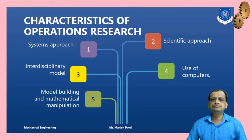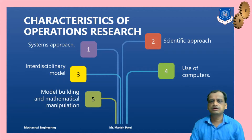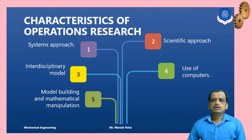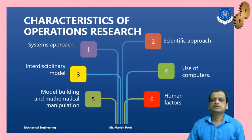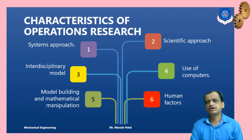Fifth, mathematical model building is one of the key characteristics of operations research. All practical life problems encountered in day-to-day scenarios are converted into mathematical models for easy calculation. Finally, human factors are also involved. While quantitative factors are looked into in detail, management factors and subjective factors are also involved. Decision making is also part of it. Both qualitative and quantitative factors are involved in the characteristics of operations research.